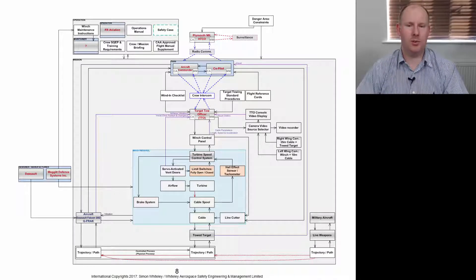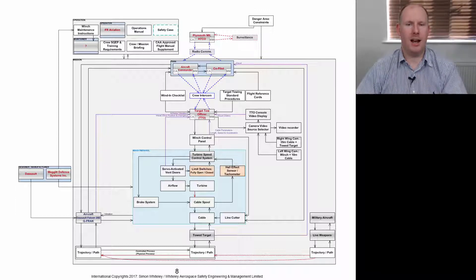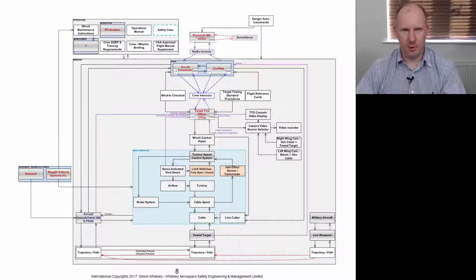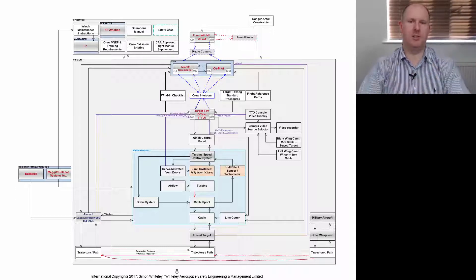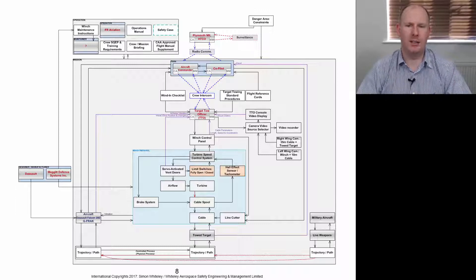The towed target itself is attached to the aircraft through the cable to the cable spool. The cable spool winds in and out under the control of a turbine, and that turbine, the movement of the turbine, is controlled by air flow, which is controlled by some servo-activated vent doors. Those vent doors are controlled by a turbine speed control system, which is interacted with by the target tow officer on board the aircraft through a winch control panel that also provides visual feedback to the target tow operator so they know things like how much cable there is, how fast it's moving in, and the acceleration of that cable as it moves in and winds out.